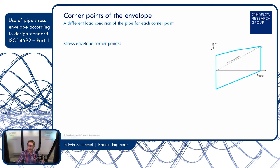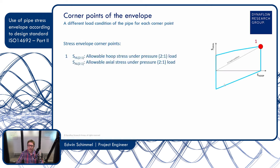We have five corner points — one, two, three, four, and five — for different load conditions. Corner point one is the strength of the pipe under pressure load. If we pressurize the pipe, the hoop stress is twice the axial stress, denoted as hoop-to-axial stress ratio of 2-to-1. As every pipe engineer knows, that is the load condition when we pressurize a pipe. For this condition, we have a hoop stress and an axial stress. S denotes allowable, H denotes hoop strength, A denotes axial strength, and the ratio indicates the load condition — the ratio of hoop to axial stress.